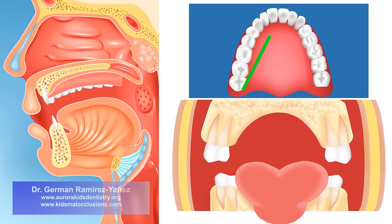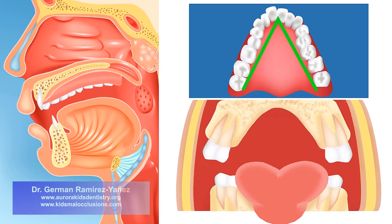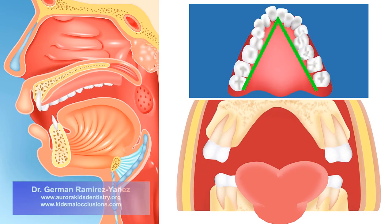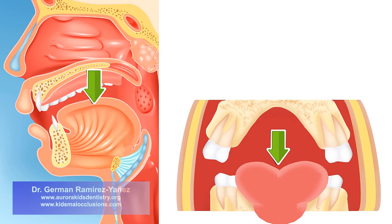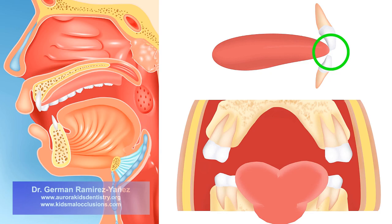The upper dental arch acquires a V-shape instead of being a rounded dental arch. Therefore, your teeth do not have space to properly align. This also produces an incorrect swallowing function. Every time you swallow — between 1600 to 2400 times per day — the tongue positions low, staying away from your palate. That forces the tip of your tongue to position between your upper and lower front teeth, pushing your front teeth outward. That is called an open bite, as your upper and lower front teeth do not touch when you close your mouth.